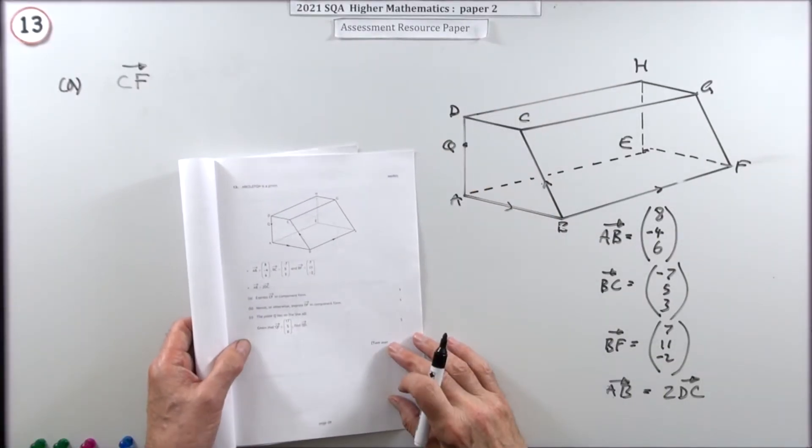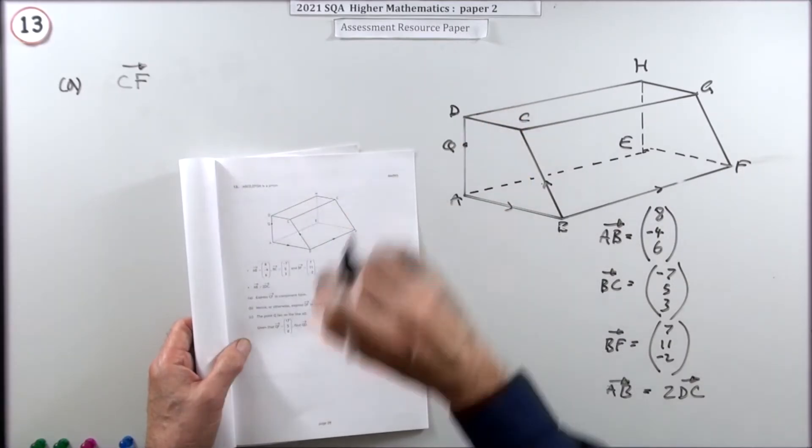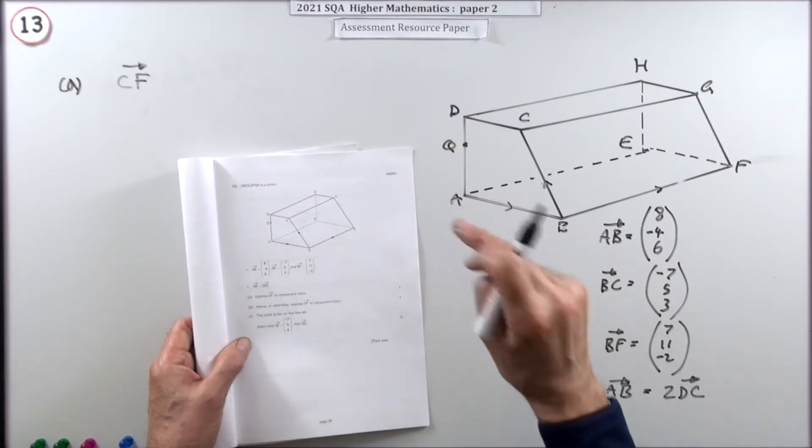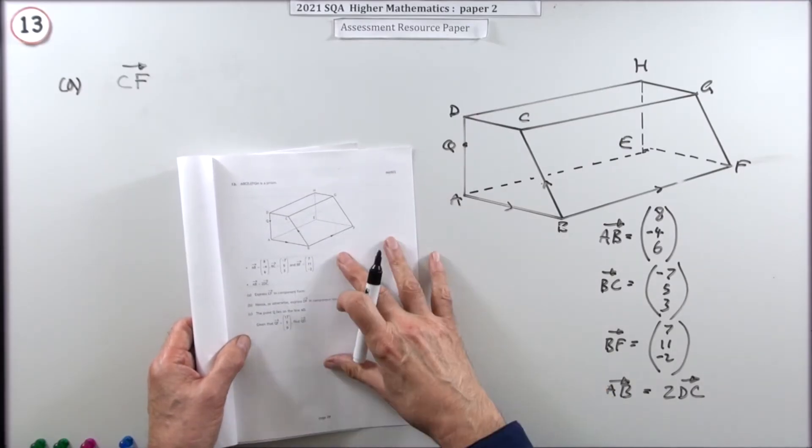Question 13 then from paper 2 of the 2021 Higher Maths Resource paper. Section A, the last one in section A, the one with the vectors and the recurrence relations, back to vectors here. So what have you got?